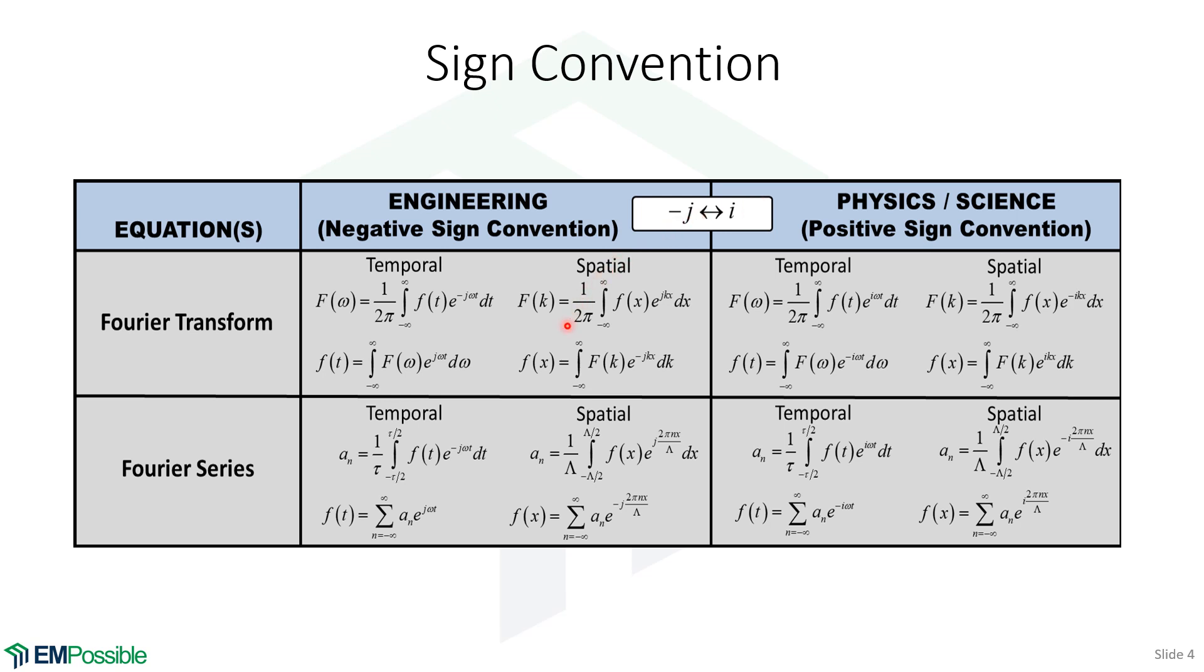And we can compare what all these Fourier transforms and Fourier series equations look like, depending whether we're applying the negative or positive sign convention. And a lot of times, people can get confused because sometimes they'll see a negative sign in the exponential, sometimes they won't. And it's like, what the heck is going on? Well, that's what's happening. It's where somebody has swapped sign convention on you when that happens. So watch for that.